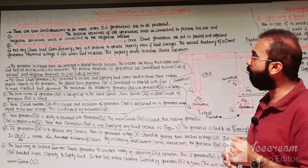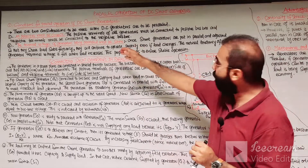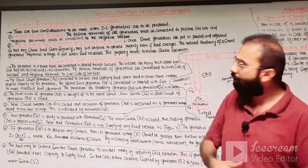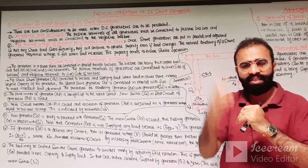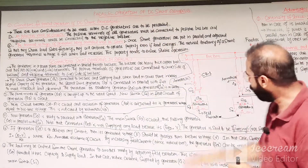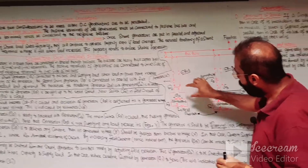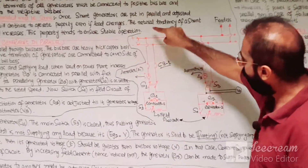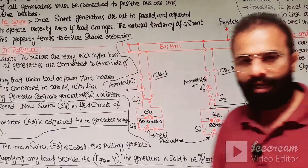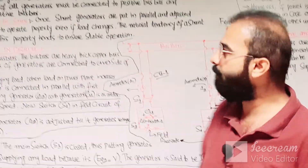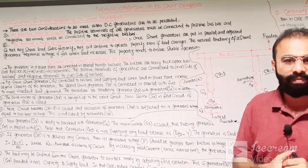Let us discuss the conditions for parallel operation of DC generators. There are two main essential considerations to be met when DC generators are to be connected in parallel. The first is that all polarities must be correct. The positive terminals of all generators must be connected with the positive terminals of the bus bar, and the negative terminal of the G1 generator is connected with the negative terminals of the bus bar.